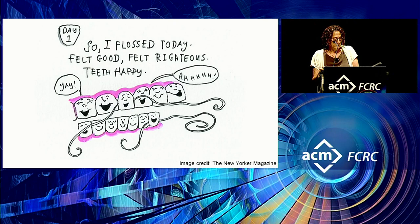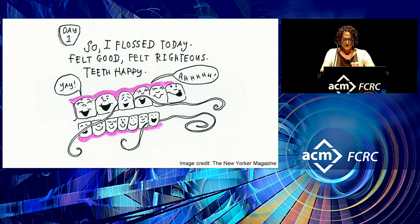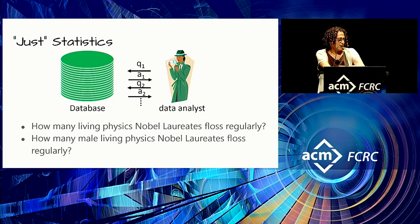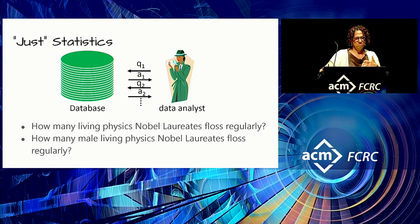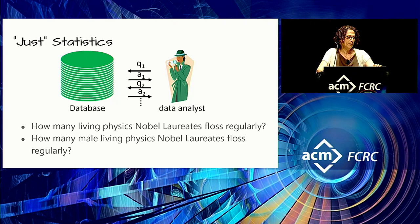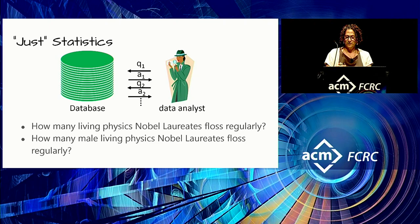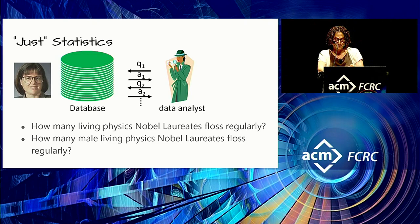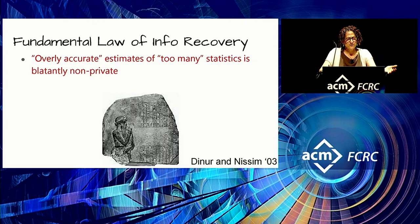Here's a running example: flossing. Statistics are not always privacy-preserving — here's a counterexample. Suppose you are given exact answers to two statistics: how many living physics Nobel laureates floss regularly, and how many male living physics Nobel laureates floss regularly. If you have the exact answers to both, even though each is a question about a set of people, you would learn whether or not Donna Strickland flosses regularly. This is called a differencing attack — one example of how seemingly innocent queries can be combined to compromise privacy.